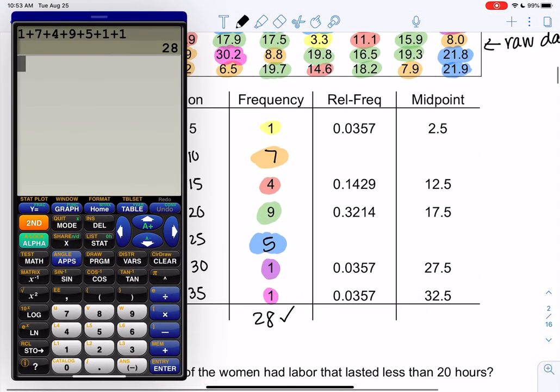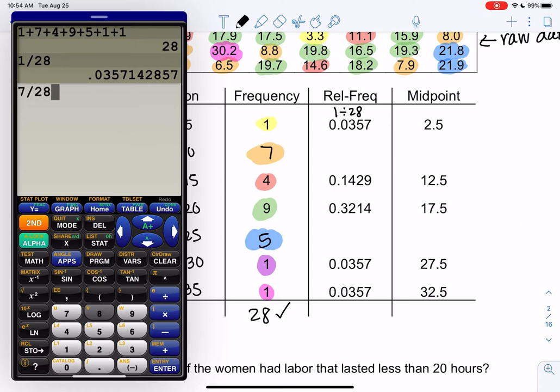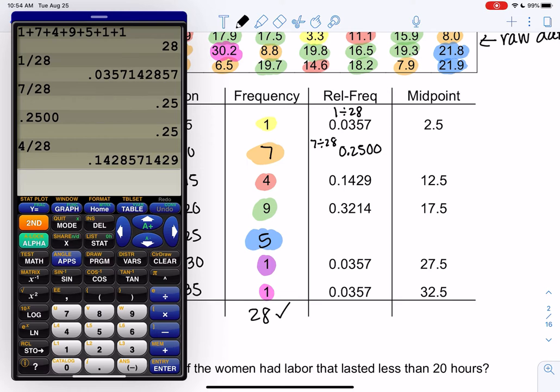All right, let's do relative frequency. Remember, relative frequency is frequency divided by total. That first one was one divided by 28, we'll do four decimal places, so 0.0357. Next one will be seven divided by 28, it's just 0.25 but to be consistent I'll add two zeros. Let's check the next two, four divided by 28, looks good. Nine divided by 28 for the next row.